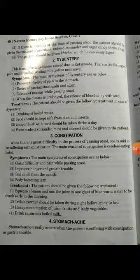The second disease is dysentery. This is an infectious disease caused due to entamoeba. There is a feeling of pain and dreadful twisting in the intestine near the navel. Symptoms include persistent feeling of pain in the stomach, desire to pass stool again and again, and release of mucus while passing stool. When the disease is prolonged, blood is also released along with stool. Treatment includes drinking boiled water, keeping food safe from dust and insects, and taking isabgol husk with curd thrice a day. A paste made of coriander, mint, and seeds should also be given to the patient.